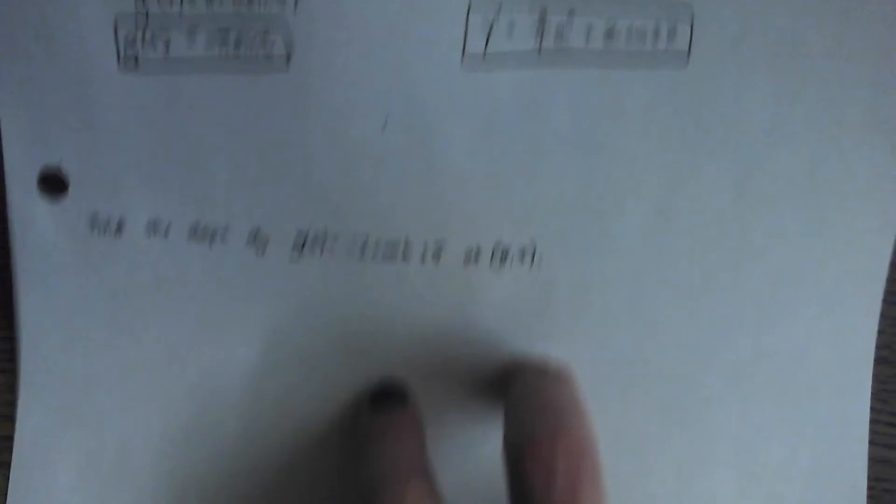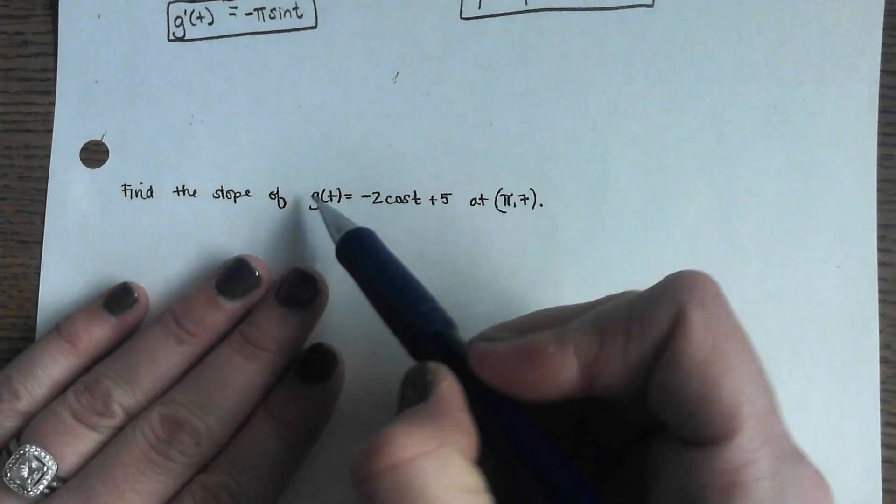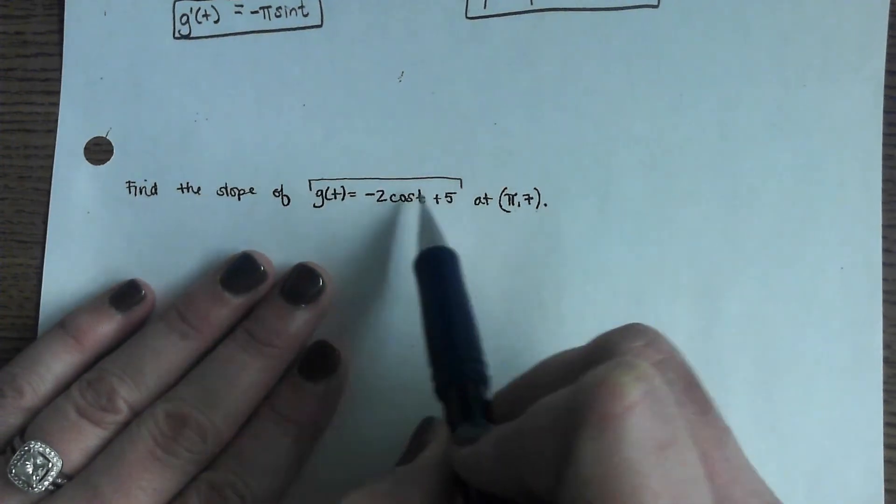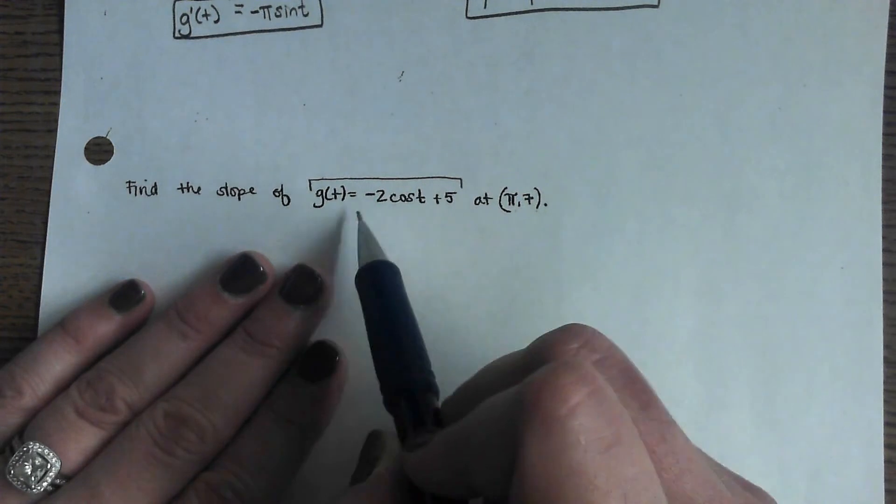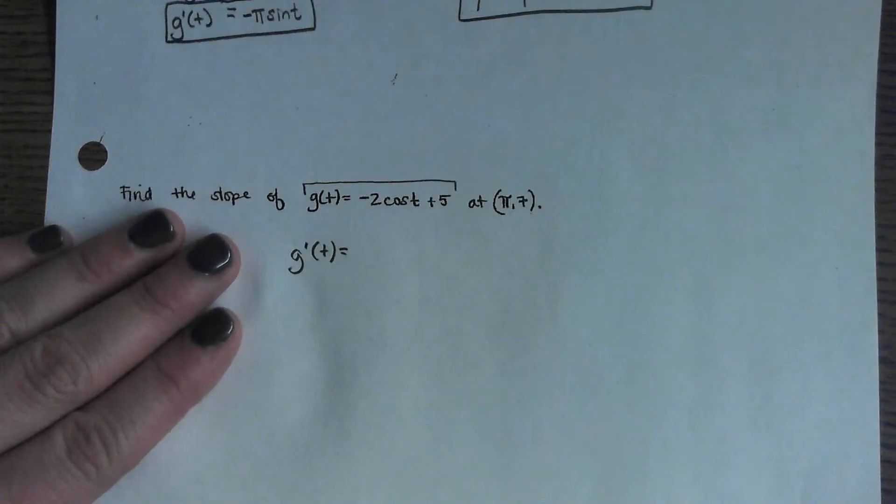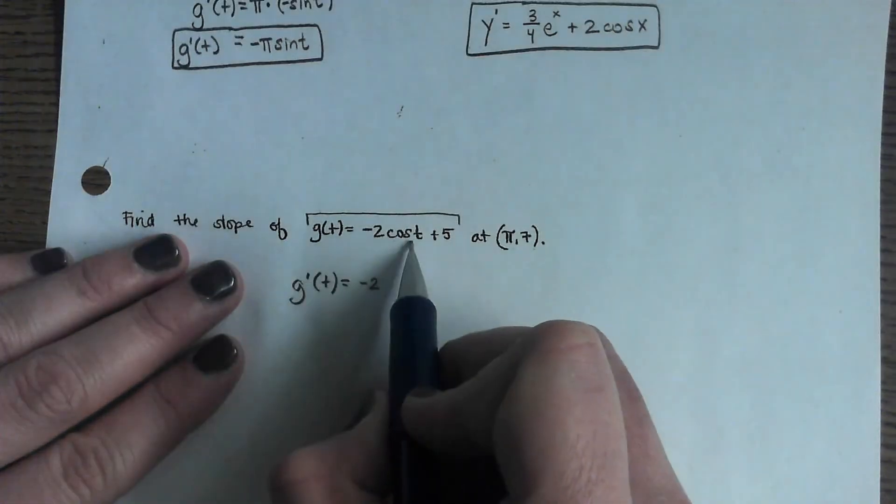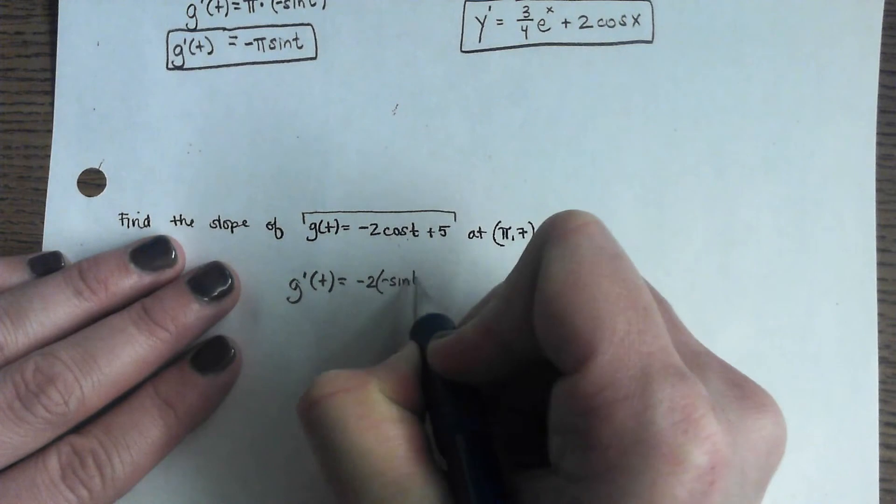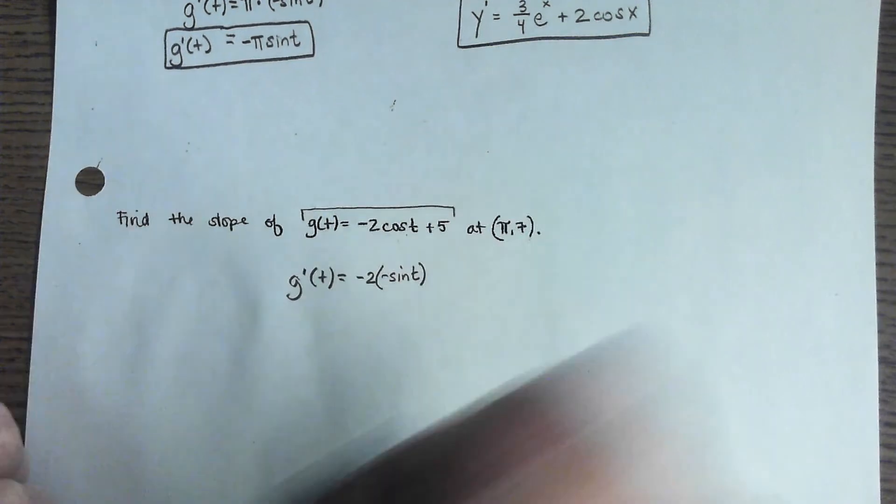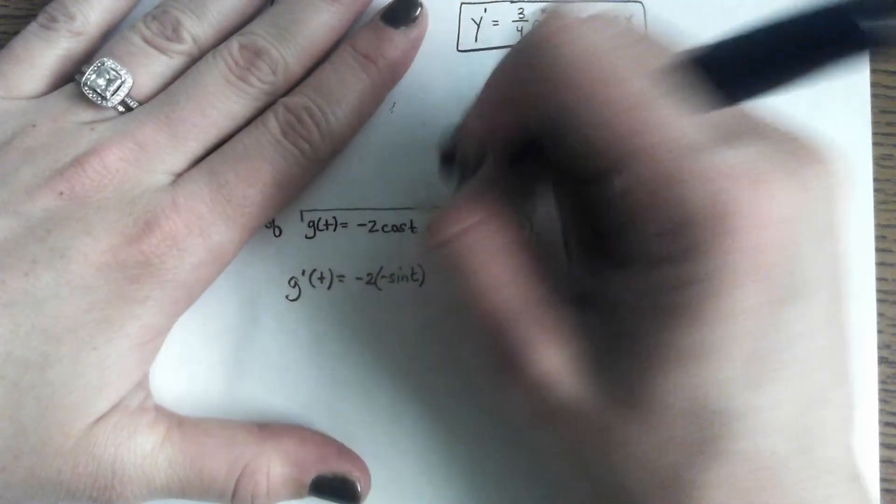Then they ask us to essentially utilize these rules to specifically find a derivative at the point pi 7. And pi 7 falls on this graph, wants us to figure out what the slope is there. So we're first going to find g prime of t. We're just going to find the generic formula first. The negative 2 is a constant, so that can stay out in front. The derivative of cosine is negative sine. So there's my function.